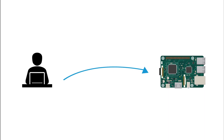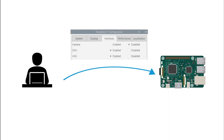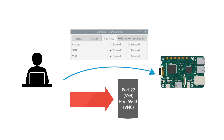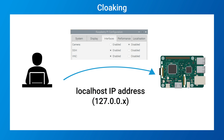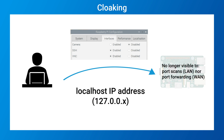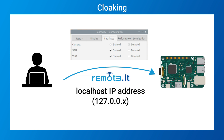So what is cloaking? In order to remotely access a Raspberry Pi, SSH or VNC needs to be enabled. Enabling both of these services opens up ports over the local network. Cloaking binds these services to the local host IP address, so the Raspberry Pi is no longer visible to port scans on the local network or through port forwarding. No one can start a connection from the outside, or even see the Raspberry Pi — it's as if it's not even there. Once cloaked, the only way to access the Raspberry Pi is to use Remotit.